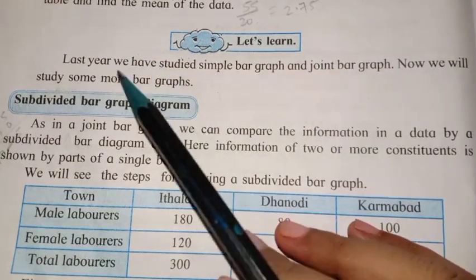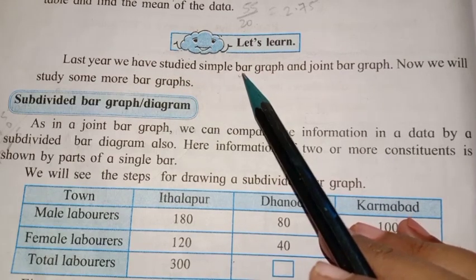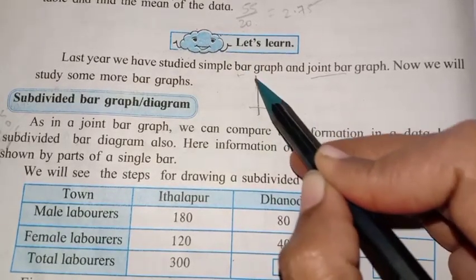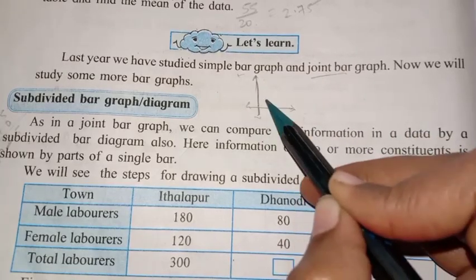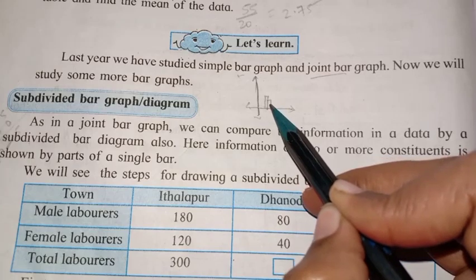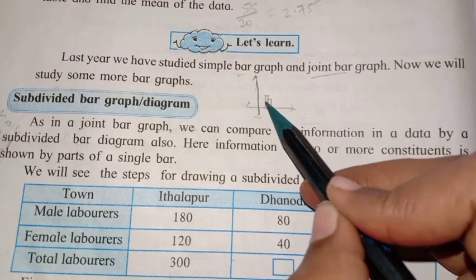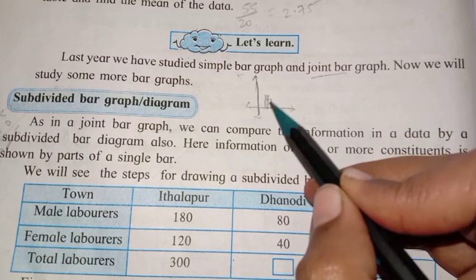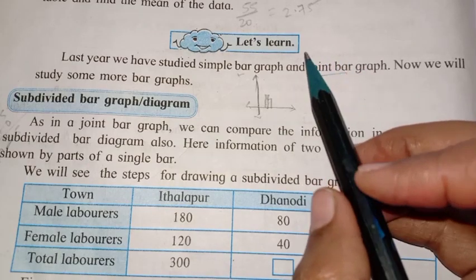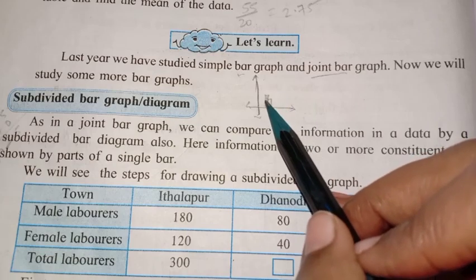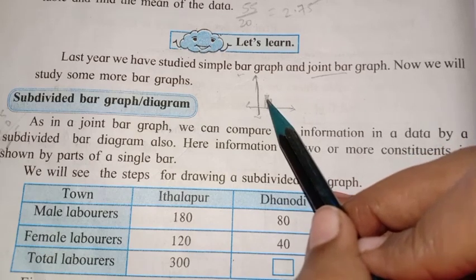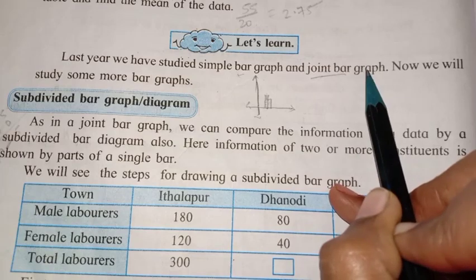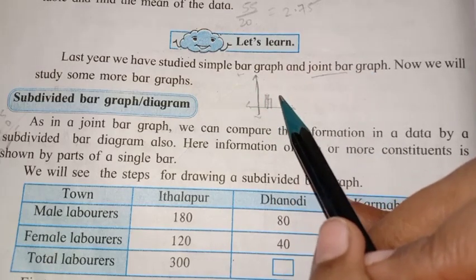Now the next point is: you have studied bar graph in 7th standard, and joint bar graph. What is joint bar graph? Suppose this is the x-axis and y-axis, and these are the bars. This is called a joint bar graph, where you are showing information of girls and boys, or men and women — two pieces of information together in one bar, but it is joint. This type of bar graph you have already studied in 7th standard.